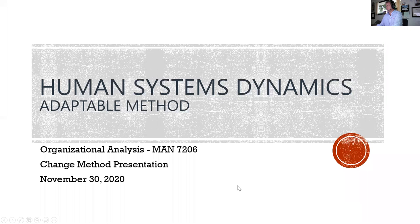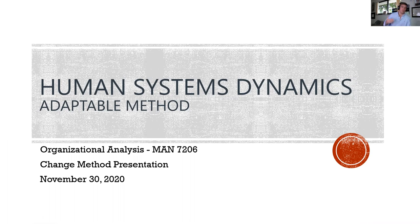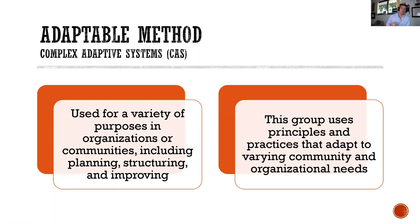Hello everyone, and Professor Buckman. My name is Claude Kirchner and we're talking about change methods today. I chose Human Systems Dynamics, which is an adaptable method. The adaptable method is a great category that I believe needs to be taken into consideration when we're talking about humans. There may be some interruptions — I'm still in my office, it's four o'clock on Monday, and I have my daughter here as well, so please excuse any interruptions.